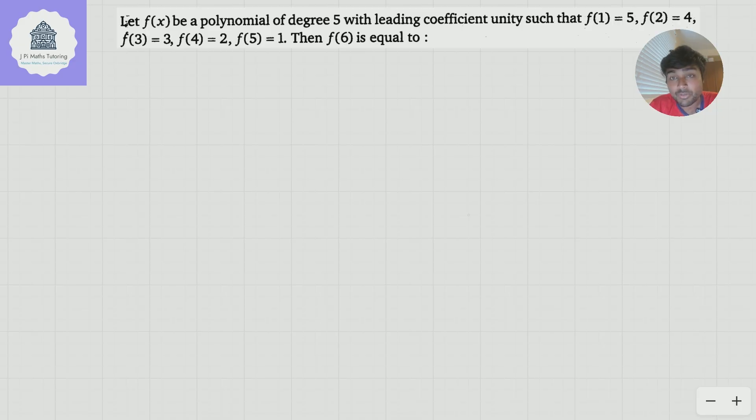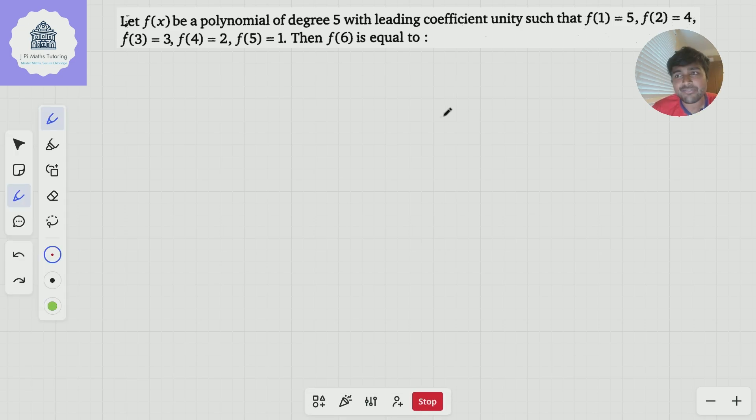One thing I notice is we've got a polynomial of degree 5, and we have 6 bits of information. We have this bit, that's 1, 2, 3, 4, 5, and the 6th bit of information is that it's got leading coefficient unity.